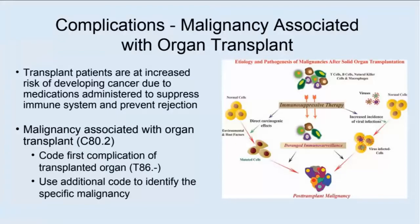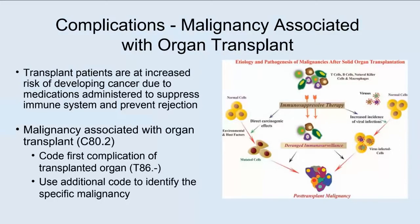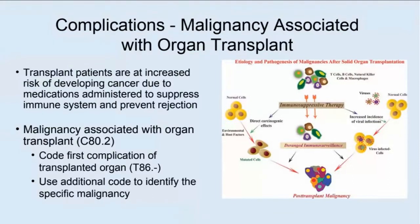Another complication is malignancy associated with organ transplant. Transplant patients are at increased risk of developing cancer because the medications given to suppress the immune system and prevent rejection can cause other conditions to become serious — immunosuppressive therapy, other carcinogenic effects, mutated cells, and increased incidence of viral infections that can lead to malignancy. Malignancy associated with organ transplantation is C80.2. You first code T86, then C80.2, then a specific code for the specific malignancy — three codes.